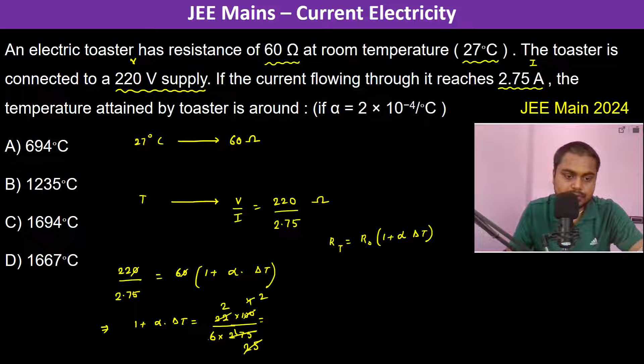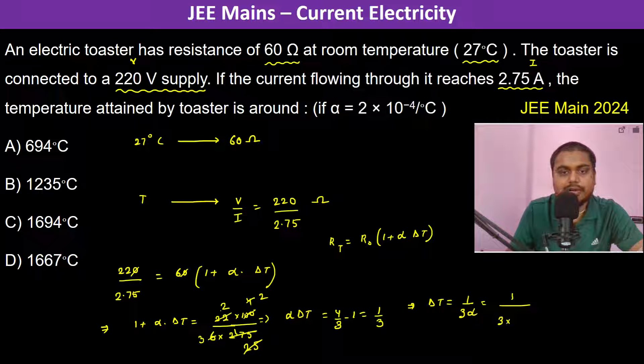...is 2 into 2, 4 by 3 minus 1, which is 1 by 3. So therefore Delta T becomes 1 by 3 into alpha, which is 1 divided by 3 into alpha. Alpha is 2 times 10 to the power minus 4.